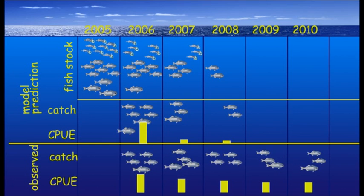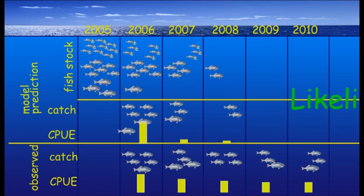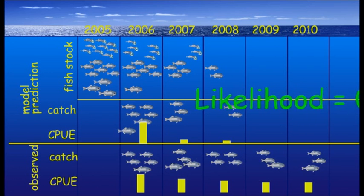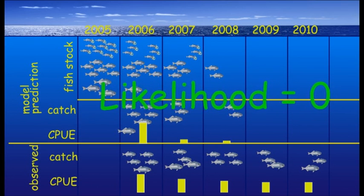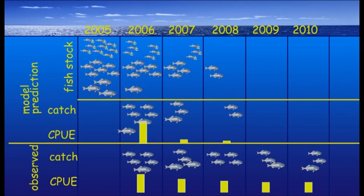The word that scientists use to describe how different the predicted values are from the observations is the likelihood. This literally means how likely is it that the model represents the observed data well. If the model's predictions are very different from the observations, the likelihood will be low. In this case, we'll give the likelihood a zero. Fitting involves adjusting the parameters until the likelihood of the model representing the observed data is as big as you can get it.